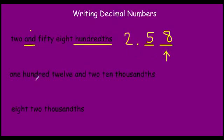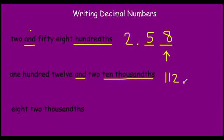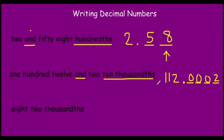Notice how the eight is in the hundredths place. For the next one, we have one hundred twelve and two ten-thousandths. One hundred twelve comes before the decimal — one hundred twelve, decimal point. Then we have two ten-thousandths, so we need that two in the ten-thousandths place. We count out tenths, hundredths, thousandths, ten-thousandths — so we have a two in the ten-thousandths place and the rest of those place values are held with zeros. So we have 112.0002. Pay very close attention to that last place value, making sure that number is in the ten-thousandths place.